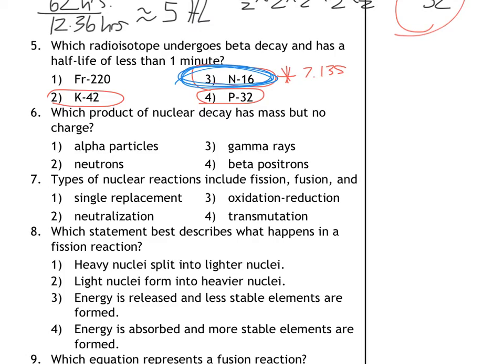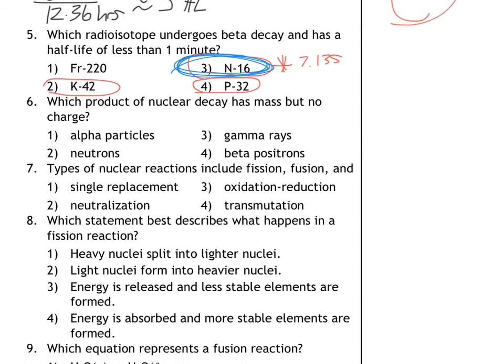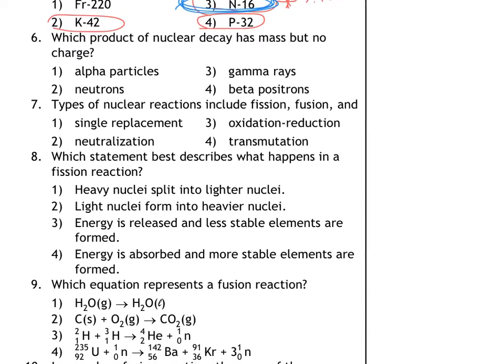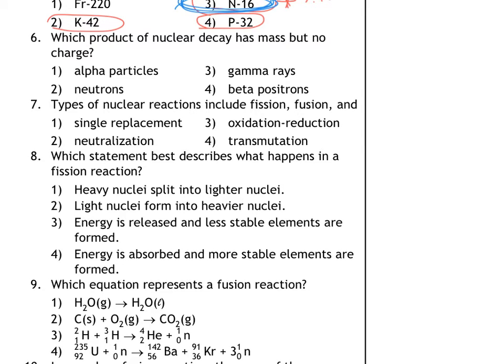Alright number six. Which product of nuclear decay has mass but no charge? Easy. It has mass but it has no charge. A great example of that could be a neutron, like a mass of 1 with a charge of 0. Let's see if that's an answer choice. It is, neutrons. So neutron would be the answer there.